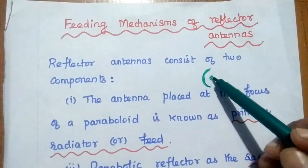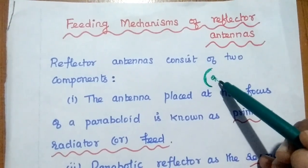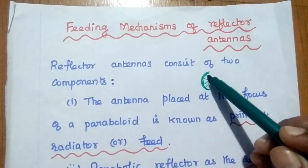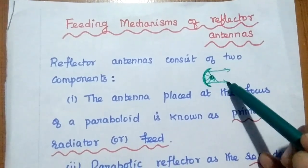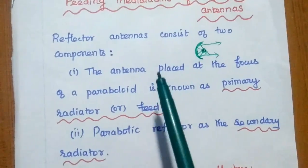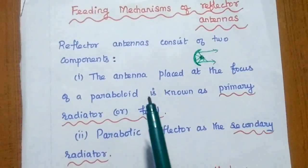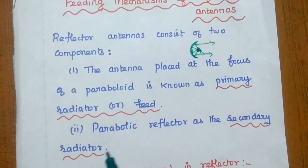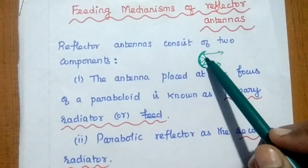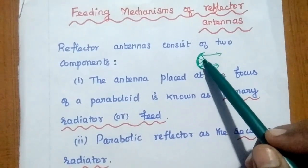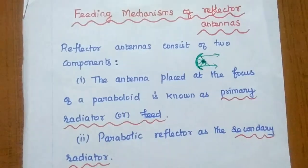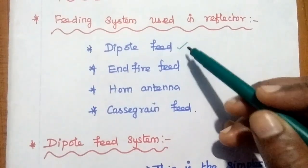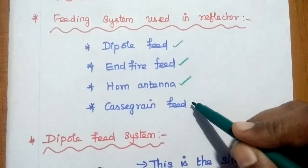The primary radiator receives an input signal from the transmitter, and from this primary radiator the signal is radiated towards the reflector. Then the reflector reflects the signal as a parallel beam. The antenna placed at the focus of a paraboloid is known as the primary radiator or simply a feed. The parabolic reflector acts as the secondary radiator. There are four important feeding systems: dipole feed, endfire feed, horn feed, and Cassegrain feed.